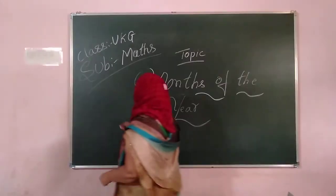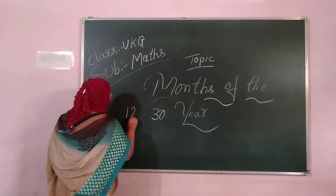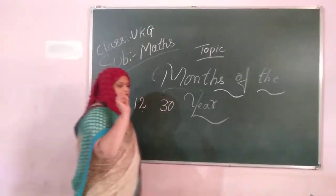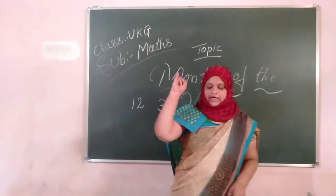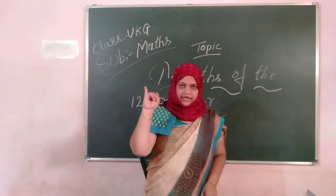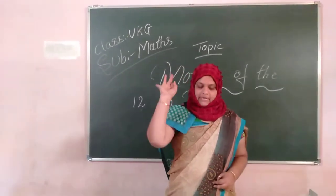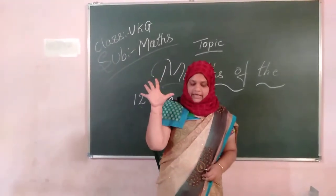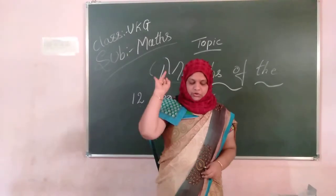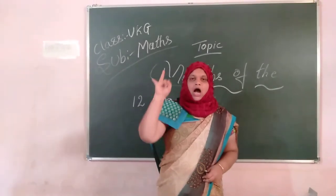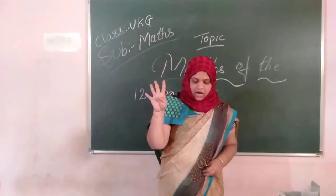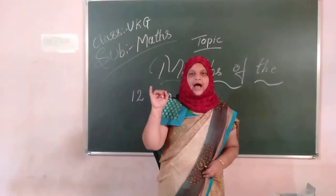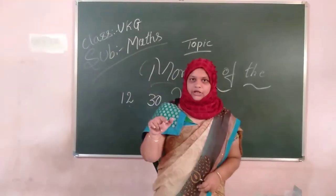One year, 12 months is there. How many months in the year? 12 months. There are, first one: January, February, March, April, May, June, July, August, September, October, November and December. Okay, children.